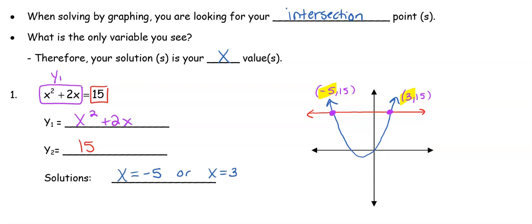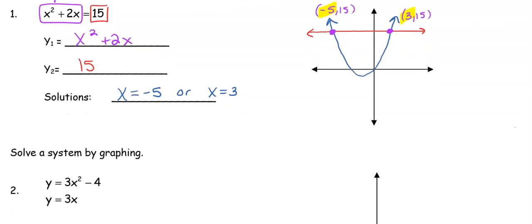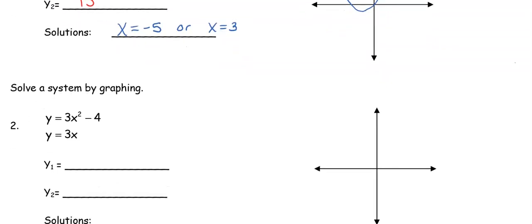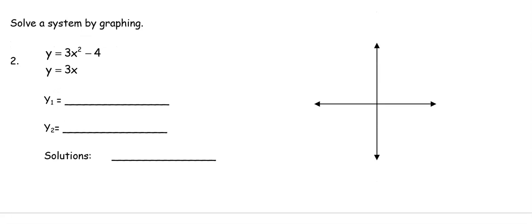So every time we are solving by graphing, we are looking for the intersection points. Now we are going to look at solving a system. So we just pointed out in the last one, number 1, the only variable I saw was x's. That's not the case when I look at number 2. Number 2, I have a system of equations here. I can still solve a system of equations using my graphing method. We put 3x squared minus 4 into y1. Notice how it's already set equal to y equals, and that's what your calculator is as well. And then we take the second equation and we enter that into y2. Again, this is only going to work if you have it set equal to y, because in your calculator it's y equals.